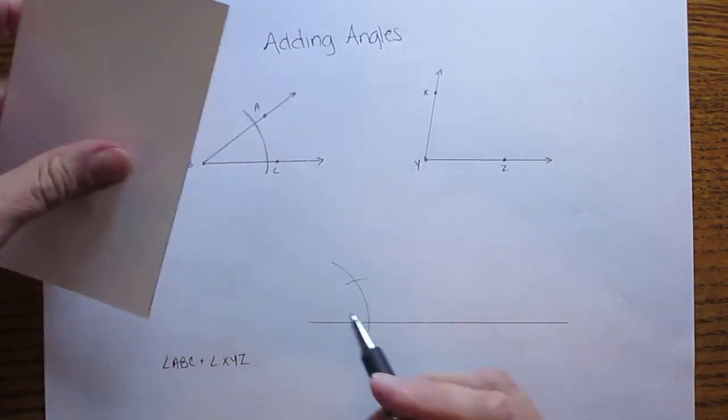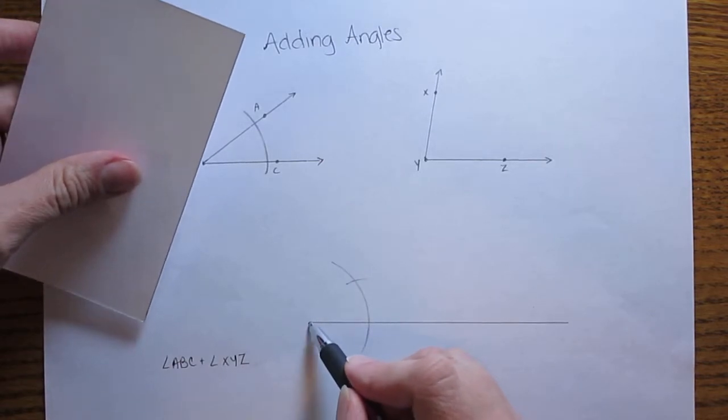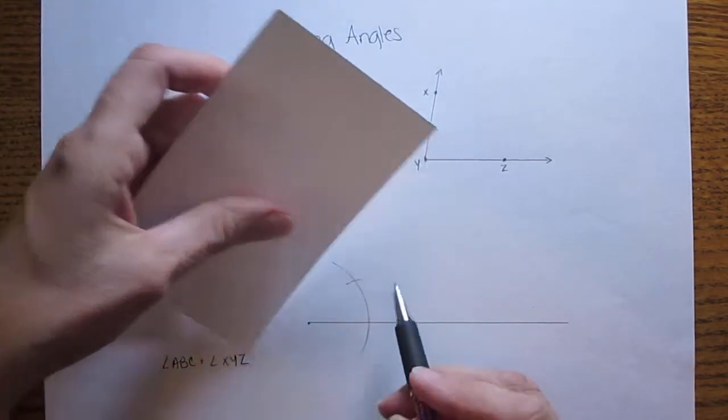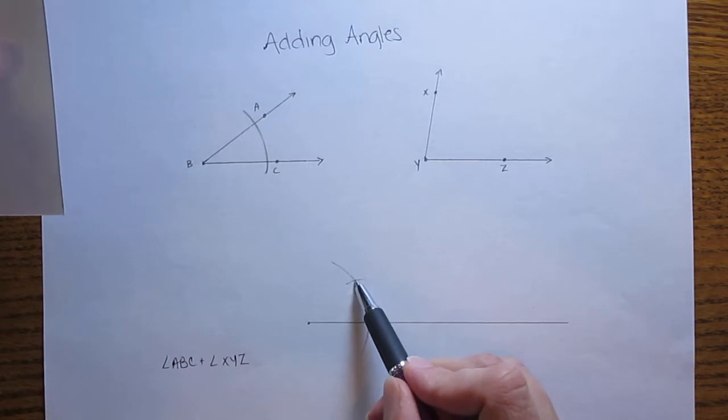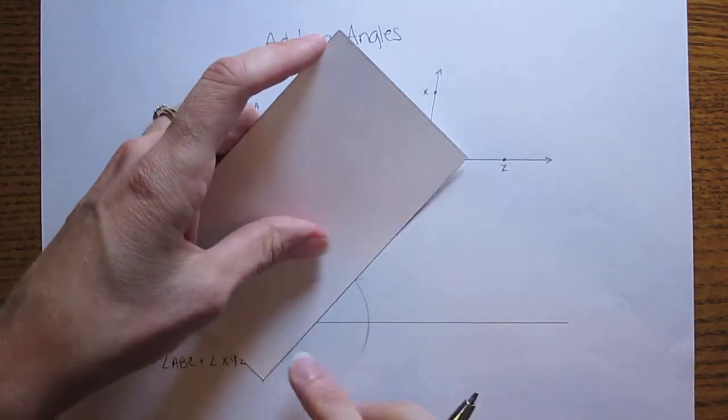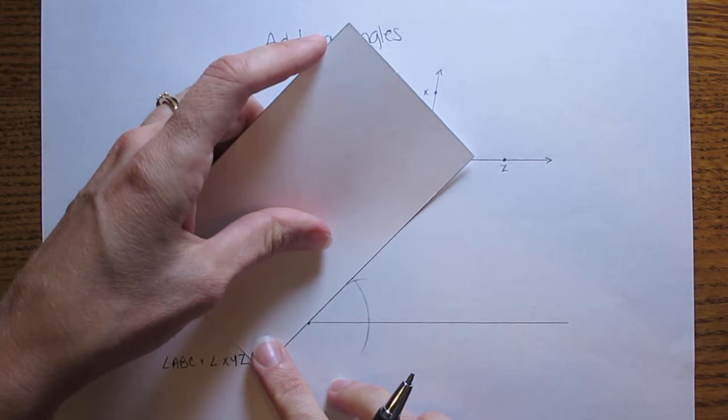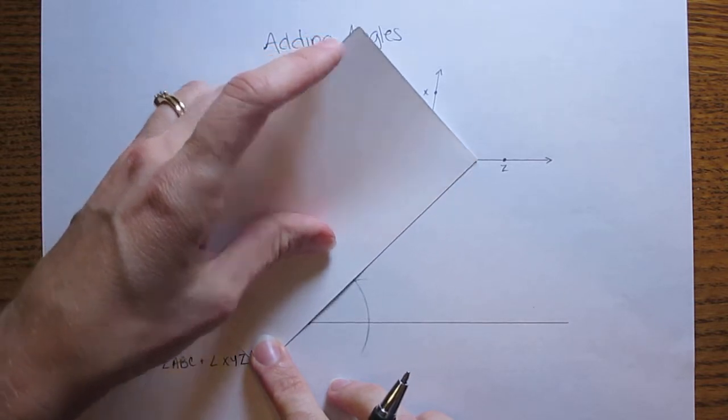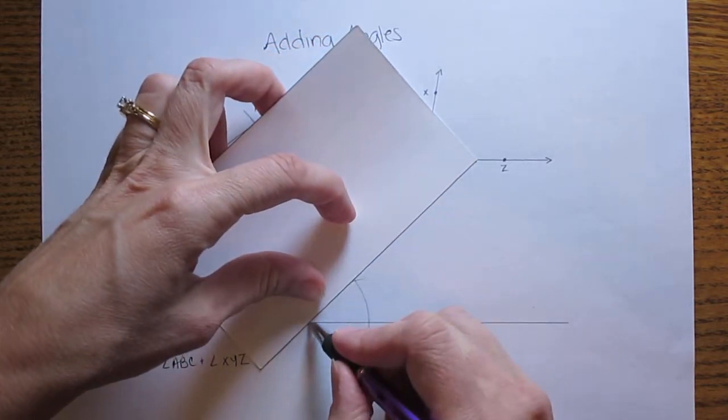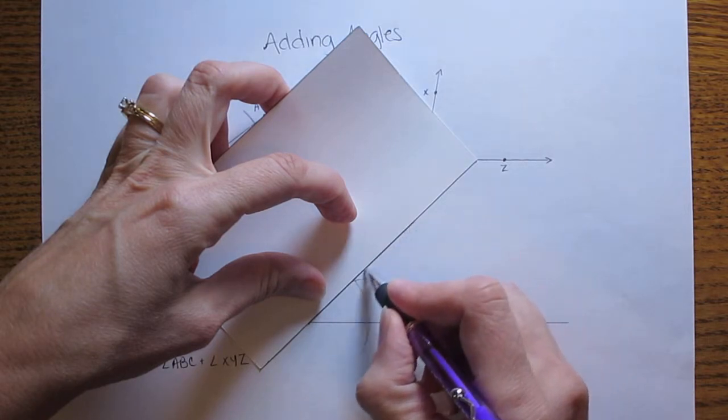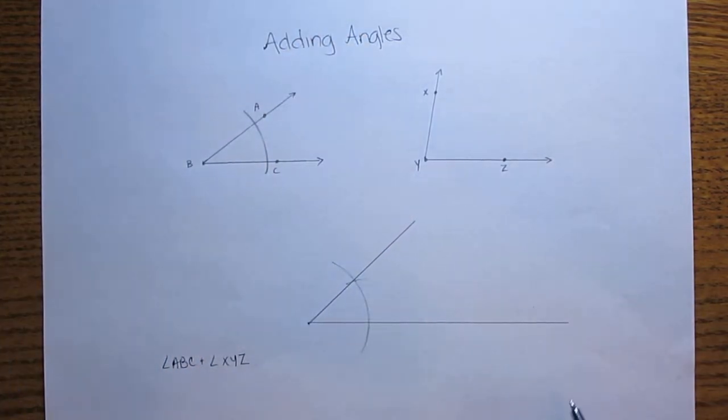Now I'm going to take my straight edge and go back to the end point of the segment and I'm going to connect it with where those two arcs intersected. So what I've just done is I've just copied angle ABC.